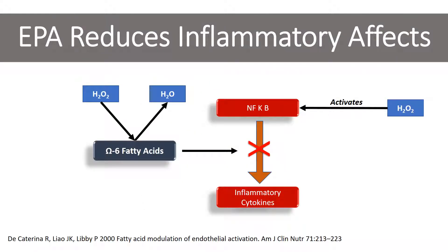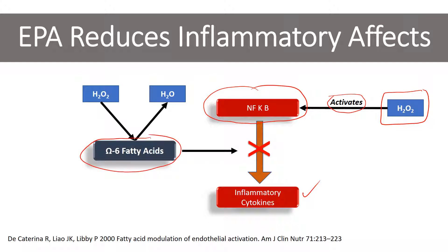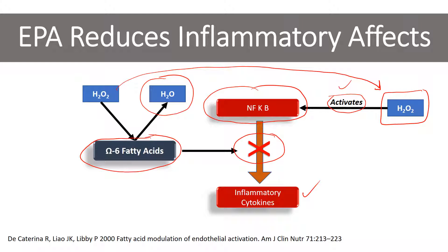Here's another interesting finding. EPA interferes with NF-kappa-B stimulation of inflammatory cytokine production — but it turns out hydrogen peroxide also activates NF-kappa-B. Omega-6 fatty acids can actually reduce hydrogen peroxide: the double bonds in the omega-6 fatty acid take up oxygen free radicals from hydrogen peroxide and convert it to inert water. With less hydrogen peroxide, there's less activation of NF-kappa-B, so omega-6 fatty acids can indirectly reduce inflammation as well.